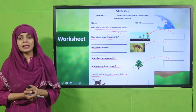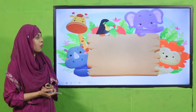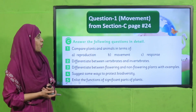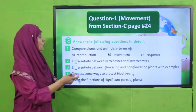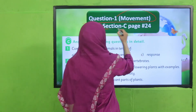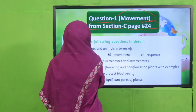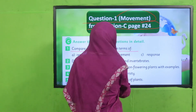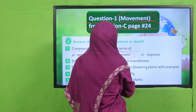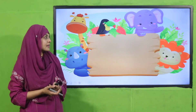I hope everybody has completed and submitted the worksheet to your teacher. For homework, do question number one — movement only — from section C, page number 24. Compare plants and animals in terms of movement. That is your homework.